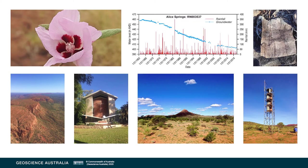Total groundwater use in Alice Springs is over 10 billion litres of water a year, or about 1,000 litres per person per day. Because of the relatively low rate of groundwater recharge, the Northern Territory government made a management decision to mine the groundwater supplies in the Amadeus Basin. The current plan is to limit extraction to a quarter of total groundwater storage in the basin over the next hundred years.